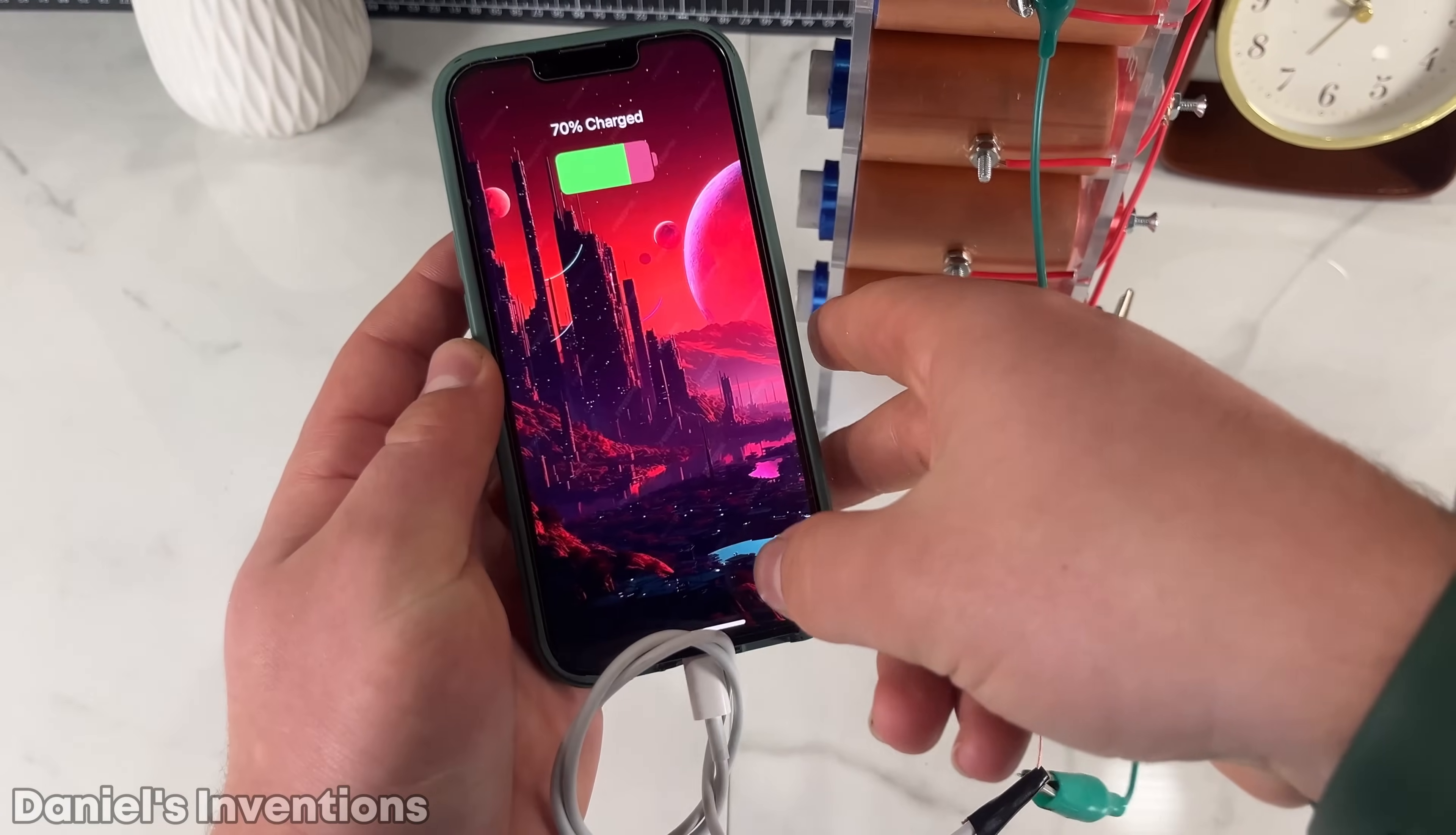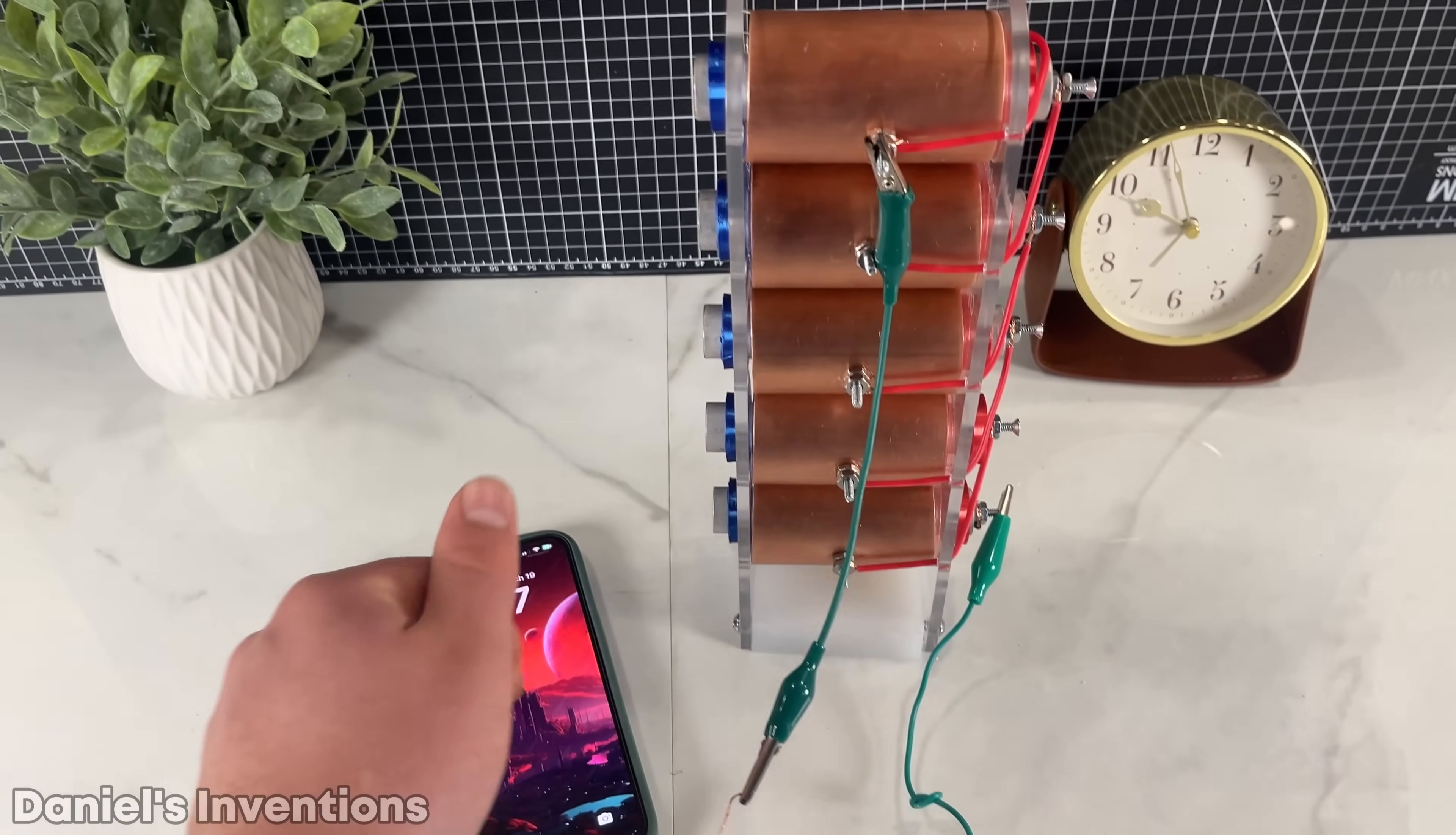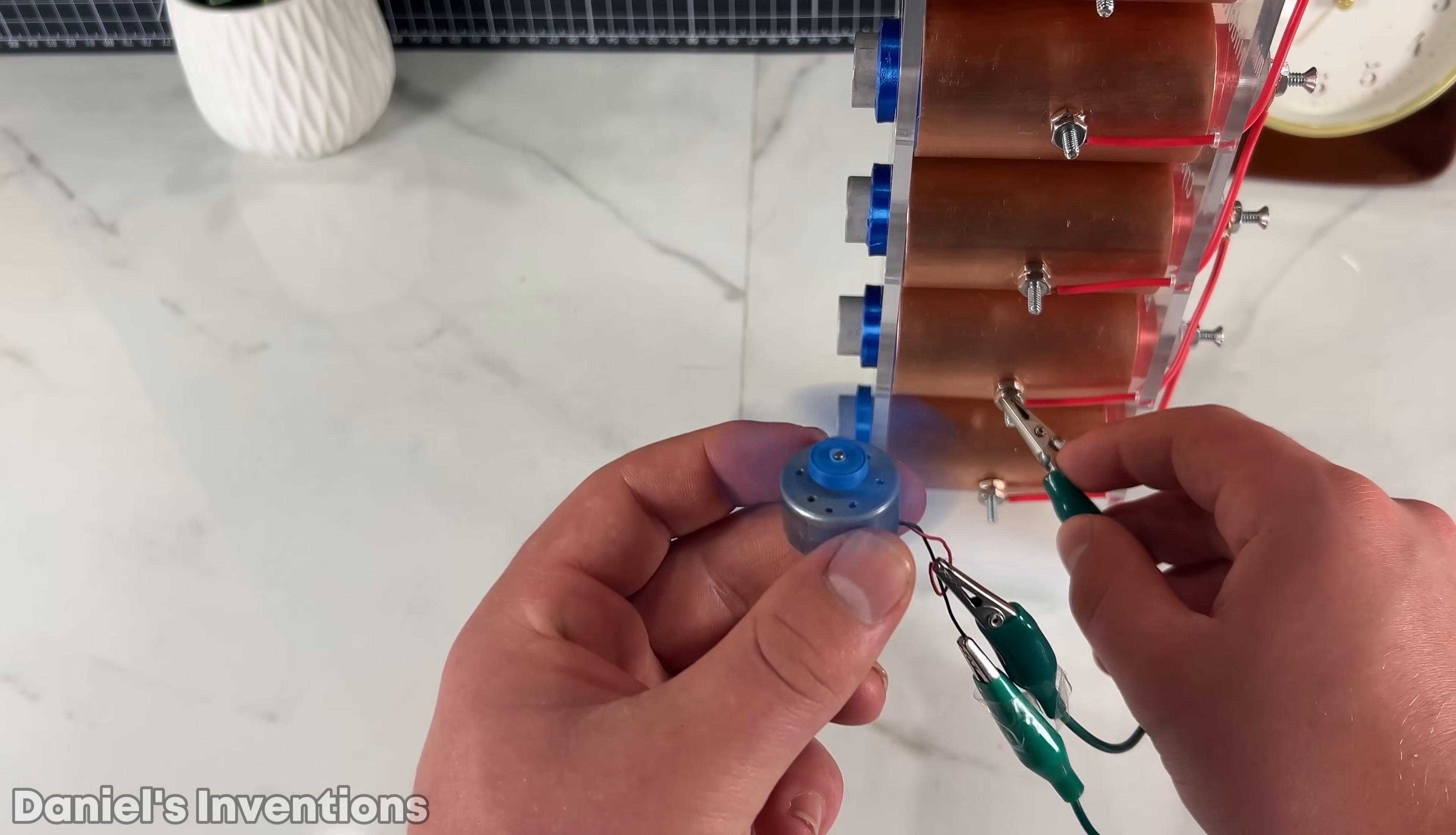I think the cell phone is charging at a slower rate than if it was plugged into a fast charger. I have a 1.5 volt DC motor, which begins to run with a single cell, but definitely goes up in RPM as the cells are added up.